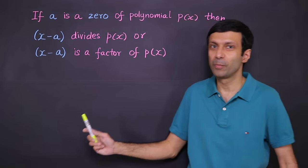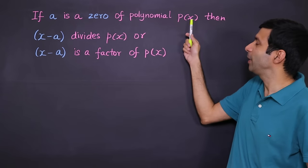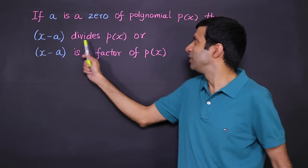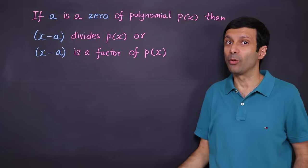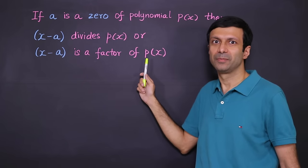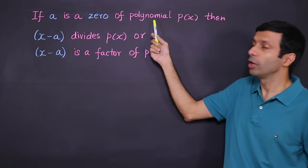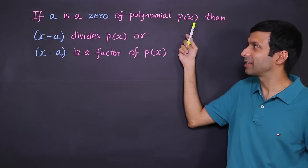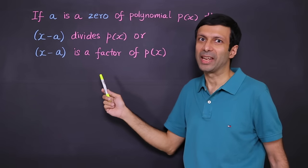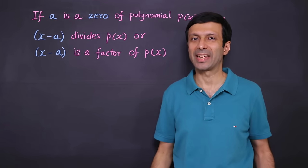Note this important point: if A is a zero of a polynomial P(x), then (x - A) divides P(x), or we can say (x - A) is a factor of P(x). For example, if 2 is a zero, then (x - 2) is a factor of P(x).